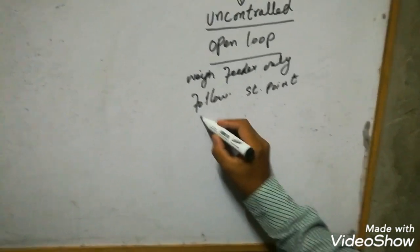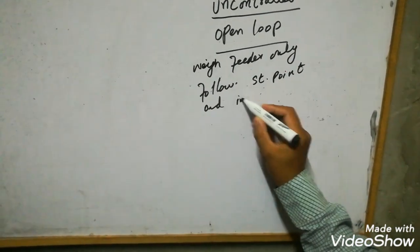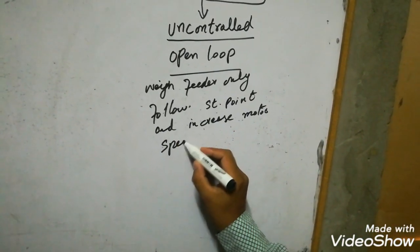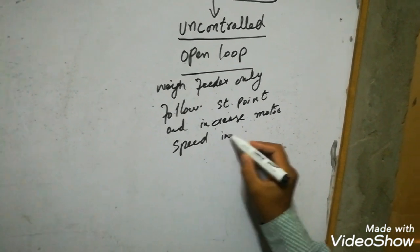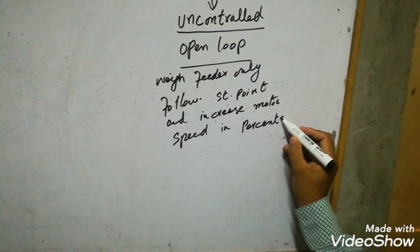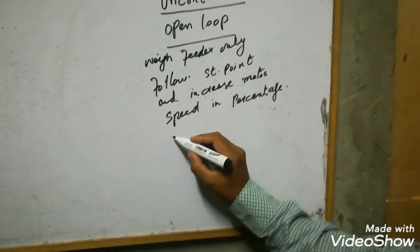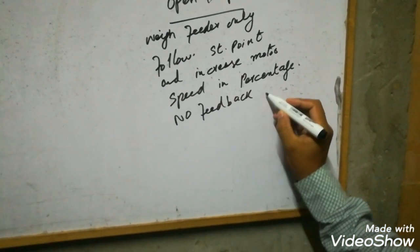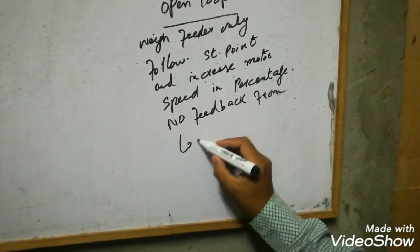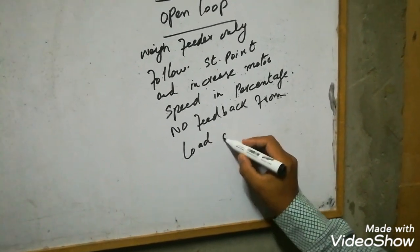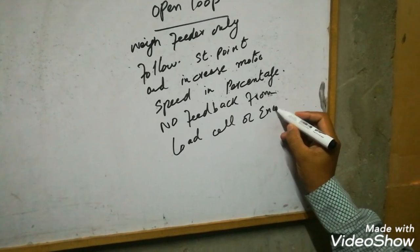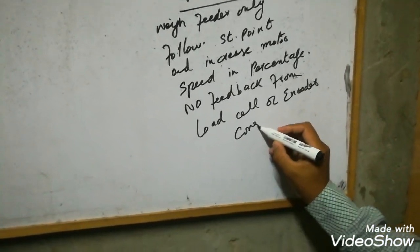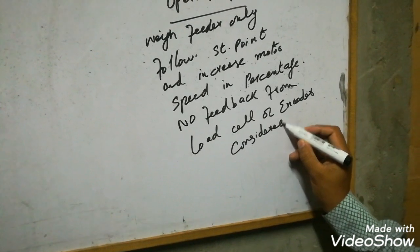Suppose we give a set point of 50%. The controller will start the VFD at 50%, and our motor will start running at 50%. It doesn't care how much material there is — whether there is less material, more material, or no material. The wave feeder doesn't care about that. The controller only gives the percentage of the set point to the VFD, accordingly to the set point the operator has given.